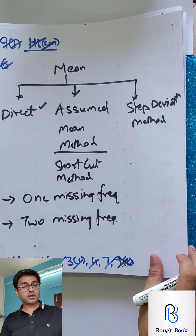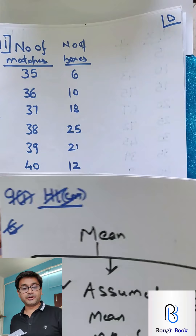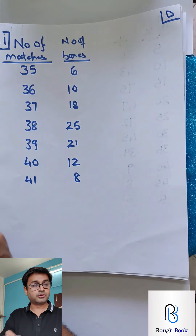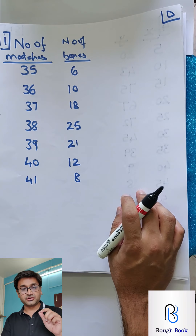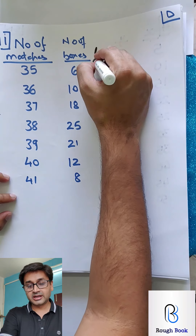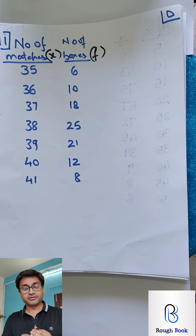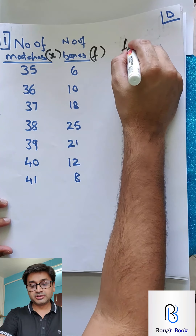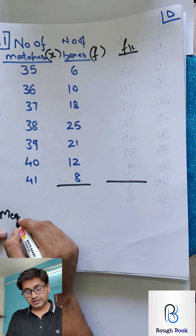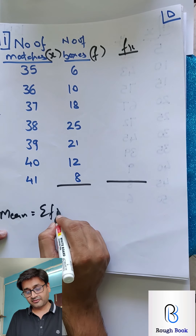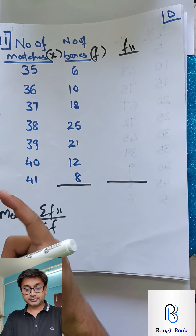Let's take one more question of the same type — direct method. We are jumping to sum number 11; the sums in between we will come back to. Again F and X. Calculate the mean: first find FX, once you get FX get summation FX and summation F, then mean equals summation FX upon summation F. Quickly go ahead and pause the video.